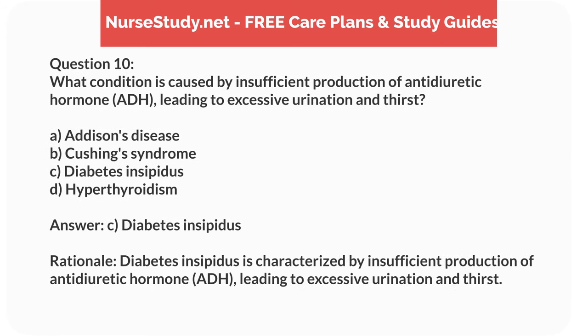Answer: C. Diabetes insipidus. Rationale: Diabetes insipidus is characterized by insufficient production of antidiuretic hormone (ADH), leading to excessive urination and thirst.